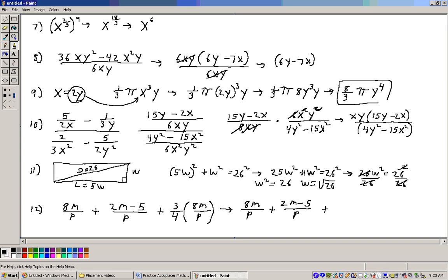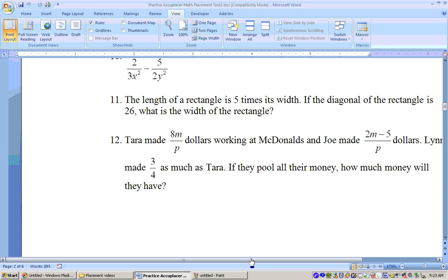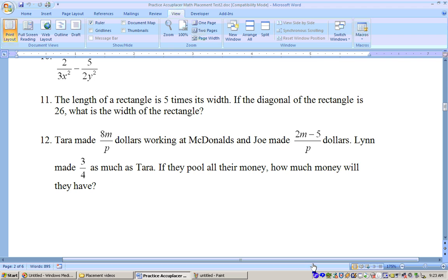Okay, the last problem, problem 12 on the EA section, says this. It says Tara made 8m over P dollars working at McDonald's, and Joe made 2m minus 5 over P dollars. Lynn made 3/4 as much as Tara. So in other words, we're going to have to take 3/4 times this 8m over P. Then it says, if they pool their money together, in other words, add all their money together, how much money will they have?